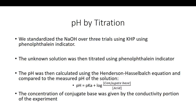The pH itself was then calculated using the Henderson-Hasselbalch equation: pH = pKa + log([conjugate base]/[acid]). We were able to do this because we got the concentration of the acid from our titration, and the concentration of the conjugate base — sodium citrate, which is the conjugate base of citric acid — from the conductivity portion of the experiment. We then looked up the pKa online and were able to find the pH.